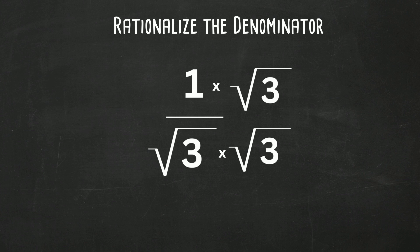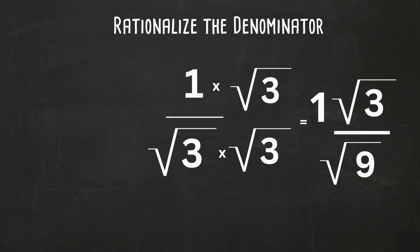And that gives you 1 times the square root of 3 over the square root of 9. And you can then rewrite that as square root of 3 over 3. And so we have rationalized, we now have a rational number at the denominator.